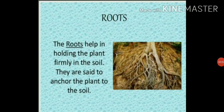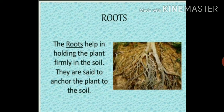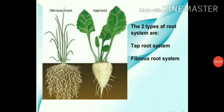Root is the most important part of a plant. It is the underground part of a plant. Each root has a cluster of very fine thread-like structures called root hairs. These root hairs absorb water and minerals from the soil. Root fixes the plant in the soil and helps it to grow. Root system consists of two types: tap root and fibrous root.